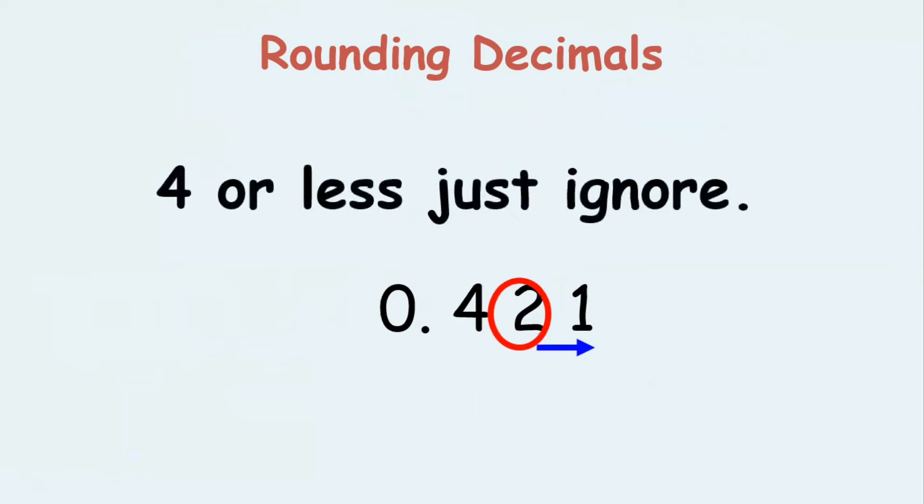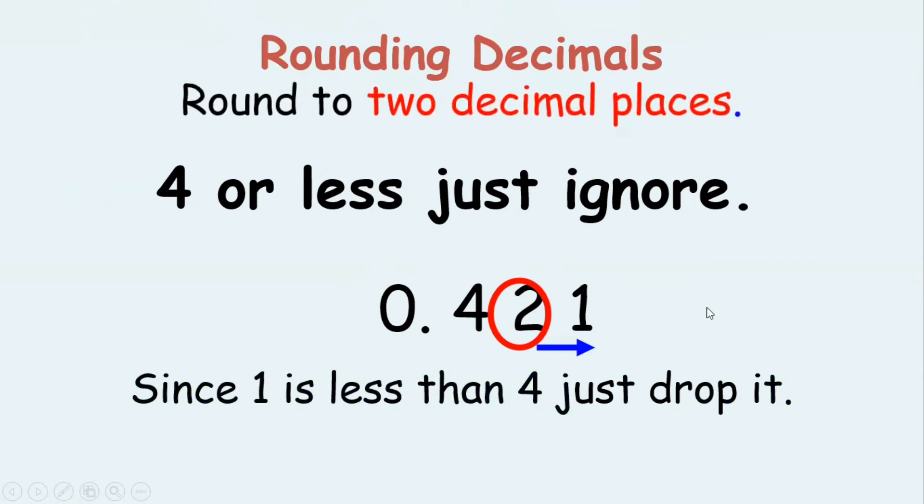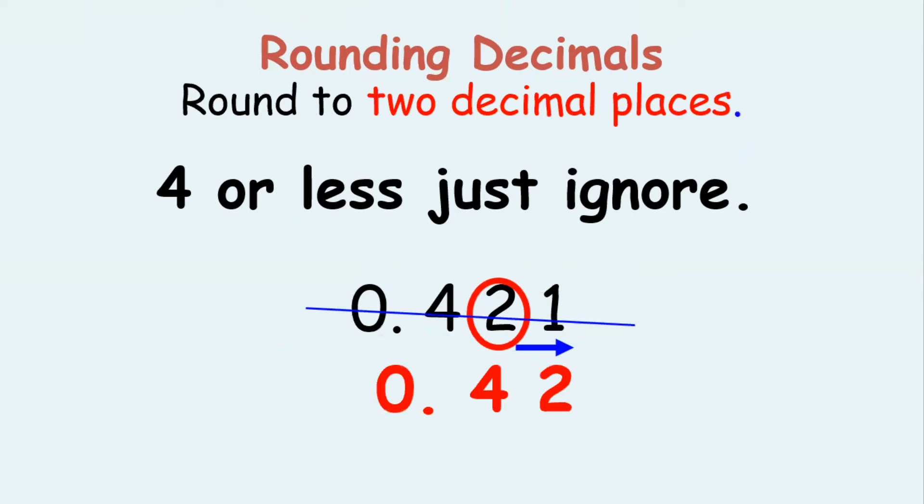If it is one, less than five, four or less, just ignore. We just ignore. Nothing is to be done to two. Rounding to two decimal places, what we get is 0.42. Got it?